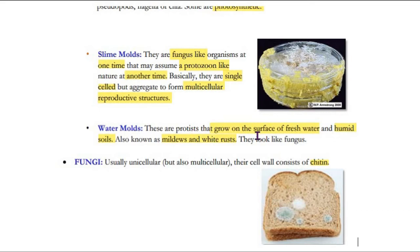There are water molds. These are found in freshwater and appear as fuzzy growth. This is a clear layer called water molds. This is also in MCQs. What is the second name of water molds? Mildew or white rust.